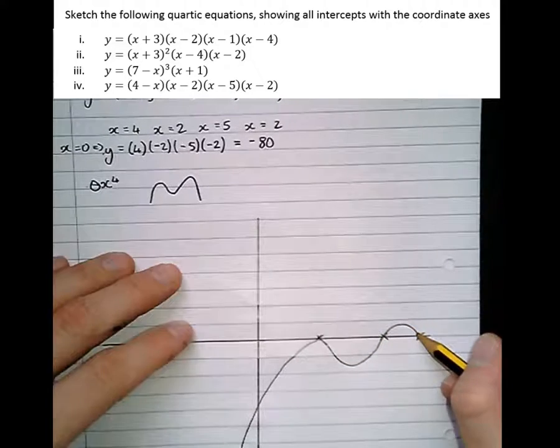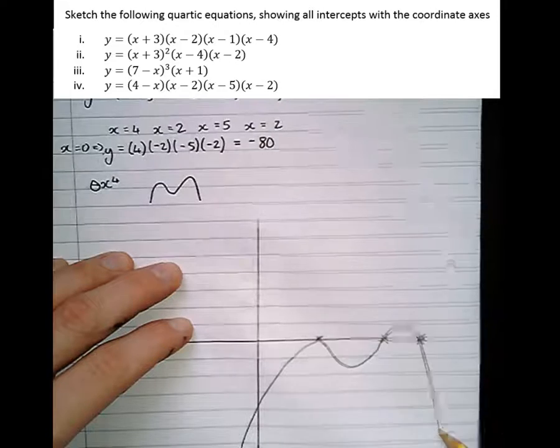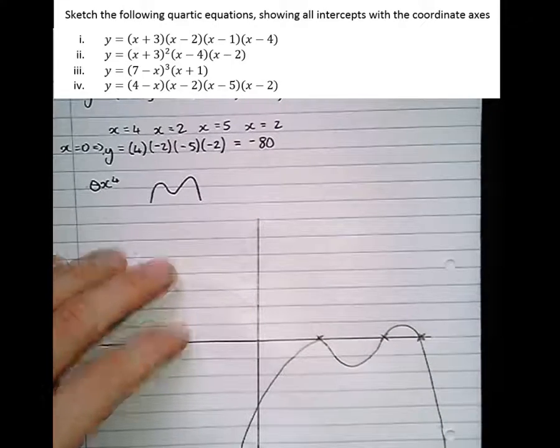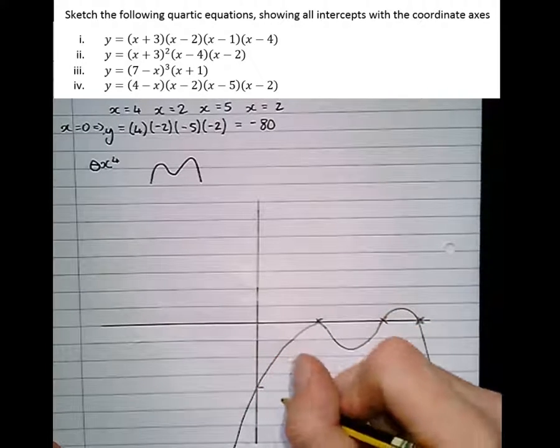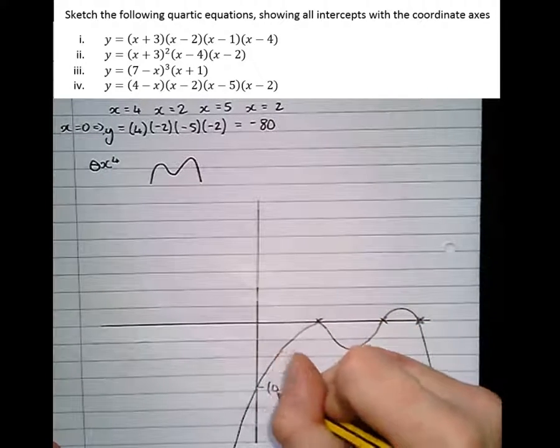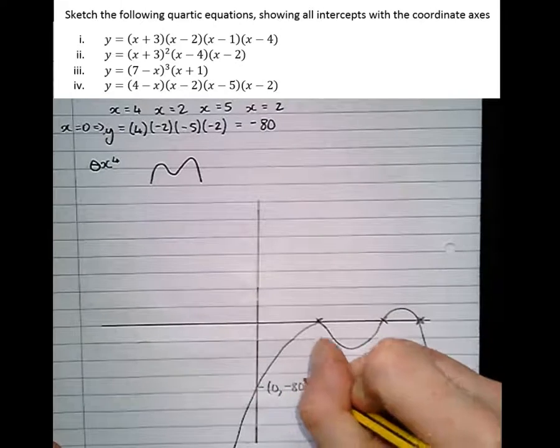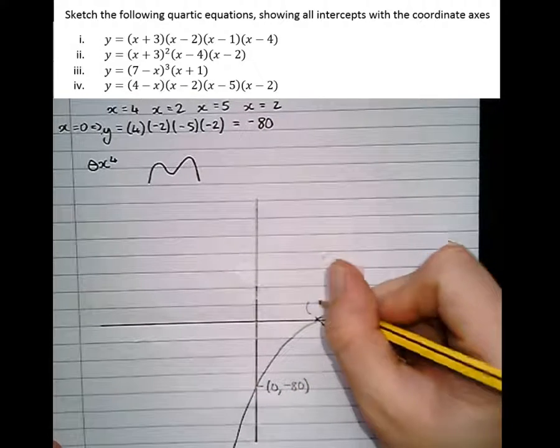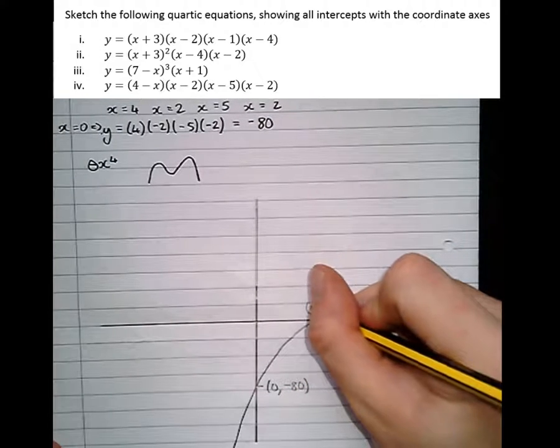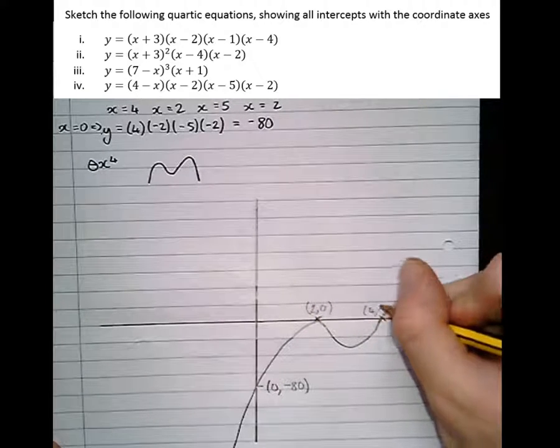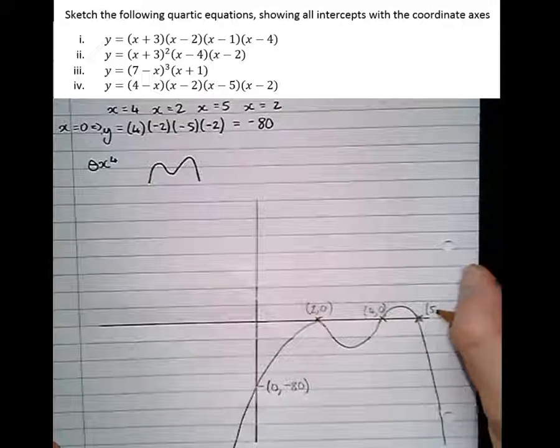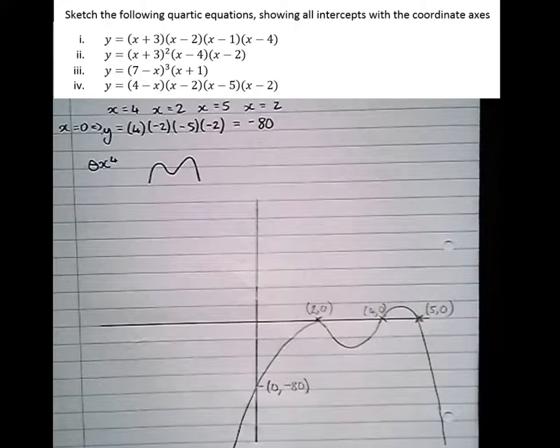And getting steeper as it goes down the page. There we go. So the y-intercept is minus 80, so 0, minus 80. Then the x-intercepts, the roots: we've got one at 2, 0; we've got one at 4, 0, and one at 5, 0. And that's how to sketch quartics.